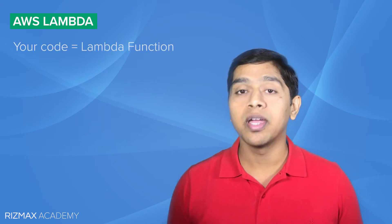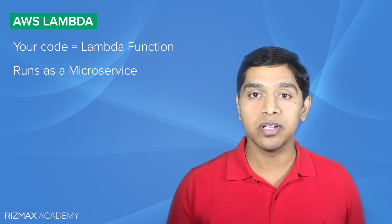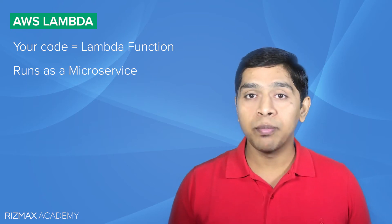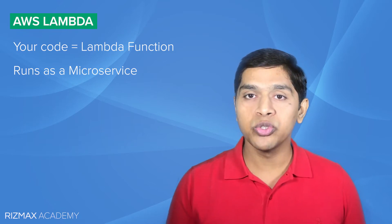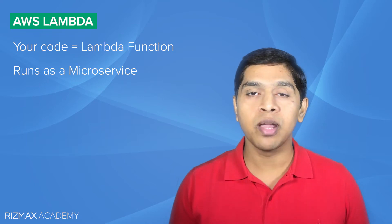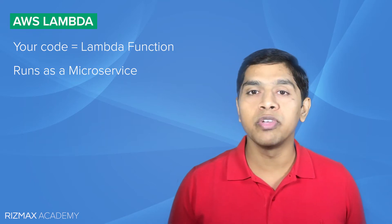When it comes to serverless applications, AWS Lambda is the most important service that you will need. AWS Lambda lets you run your code without having to create or manage any servers. You simply upload your code to Lambda and Lambda ensures that your code runs on highly scalable and highly available infrastructure. Each piece of code that you upload to Lambda is called a Lambda function, and it runs as a self-contained independent microservice. With Lambda, you pay only for the time your code runs and there is no charge when your code is not running.